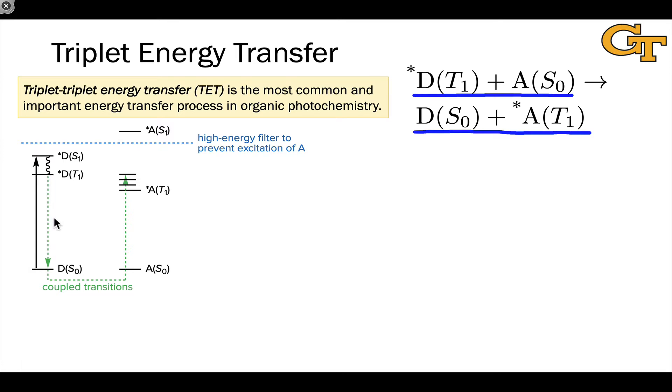And then there is this coupled non-radiative transition that happens where the transition of D star T1 back to D S0 is coupled to the transition of A S0 to A T1. And these are at equal energies as they must be for these non-radiative horizontal transitions.